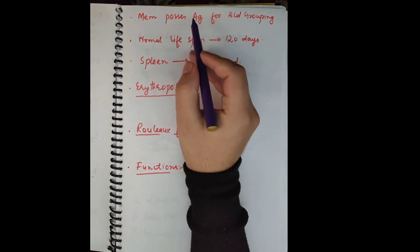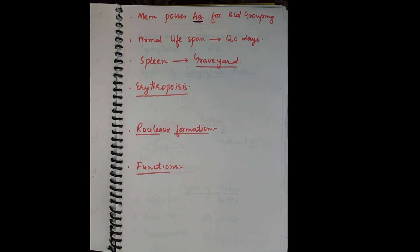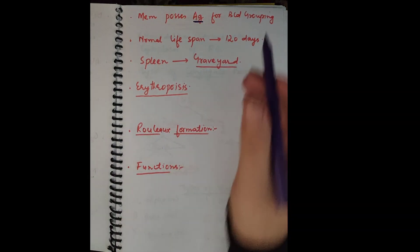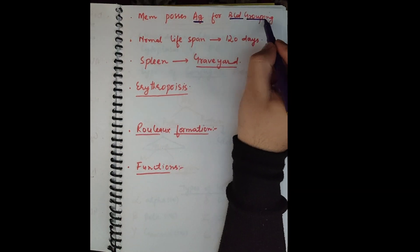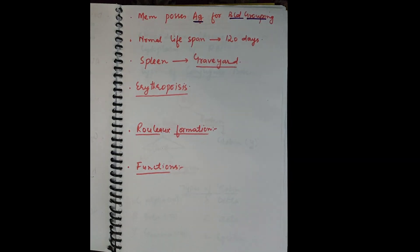The membrane of the RBC possesses different antigens. One very important group we have already discussed is the blood grouping antigens — RH antigens and ABO antigens. All these antigens are present on the membrane of the RBC.